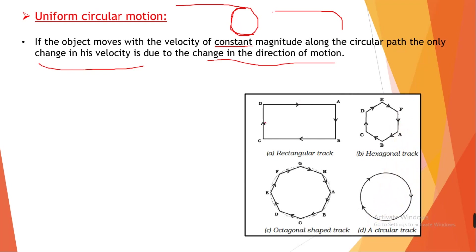Suppose we take a rectangular track. If we talk about the path here, we change the direction of motion. We can see: A to B is the 1st segment, B to C is the 2nd, C to D is the 3rd, and D to A is the 4th. This means that on a rectangular track, the direction changes 4 times.